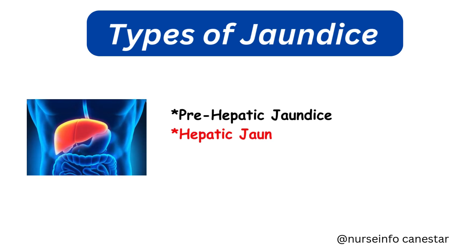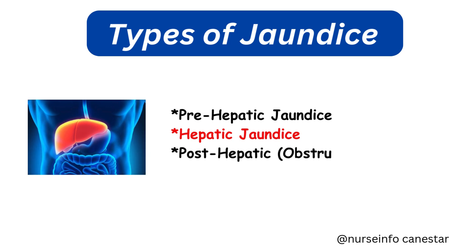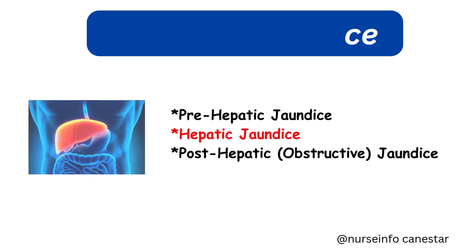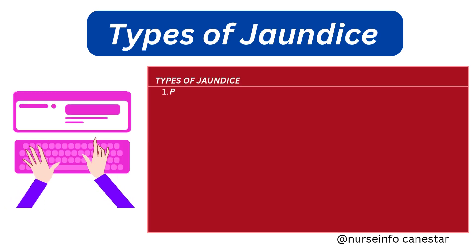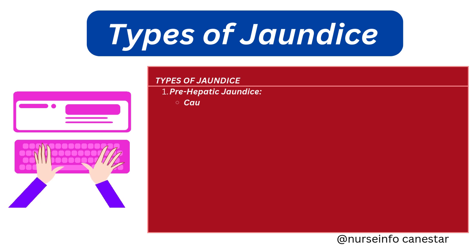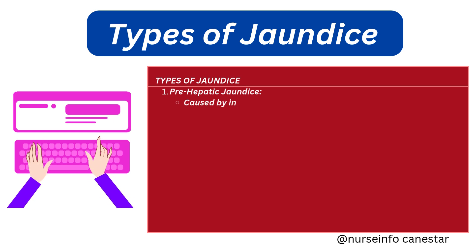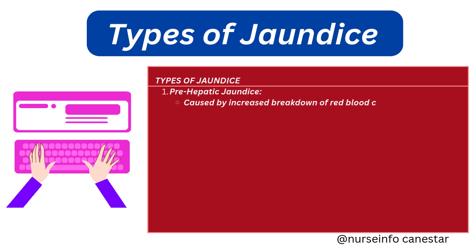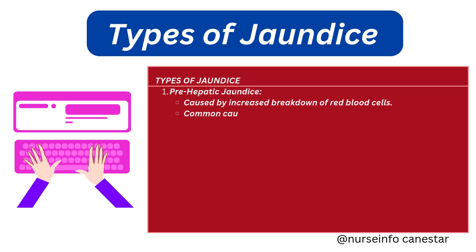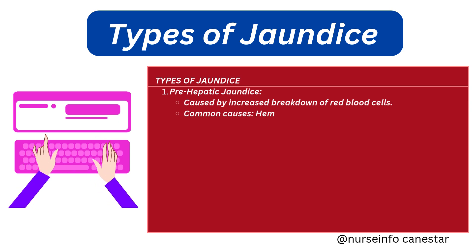Prehepatic jaundice occurs before bilirubin reaches the liver, typically due to increased destruction of red blood cells — hemolysis. When hemolysis happens faster than the liver's ability to process bilirubin, unconjugated bilirubin accumulates in the blood.